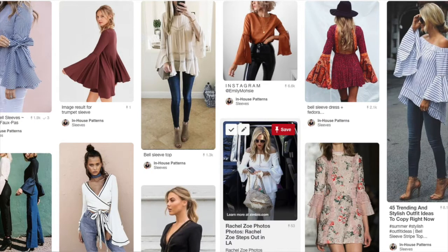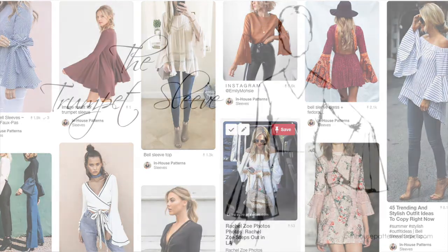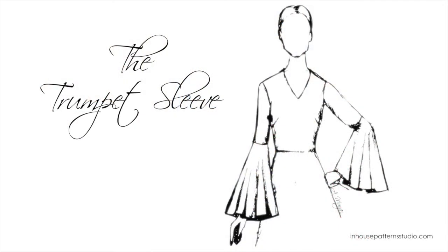First of all, I want to show you what a Trumpet Sleeve looks like. So I've created a Pinterest board to show you some examples. You'll find a link to this board below. As you can see here, there are many variations of this sleeve shape, but the common silhouette is a fitted upper sleeve with a flared bottom hem.